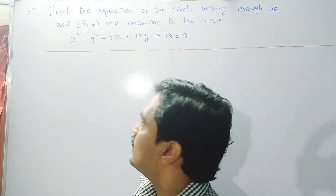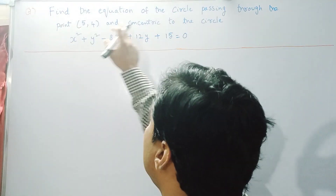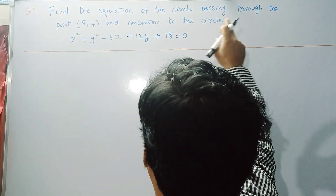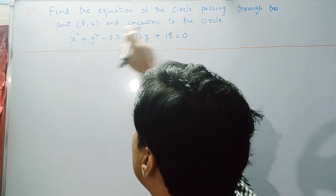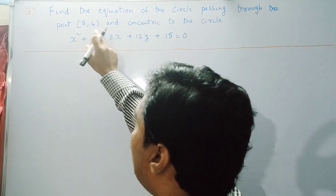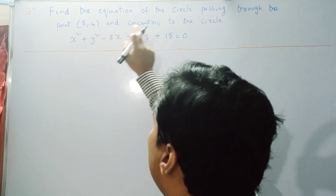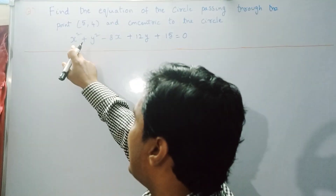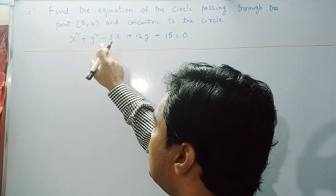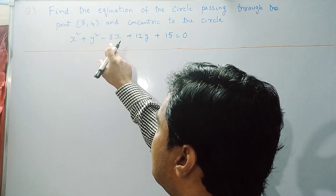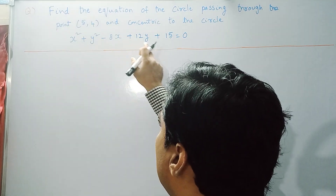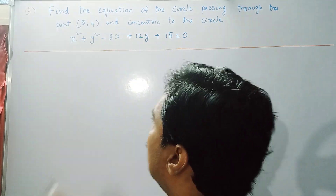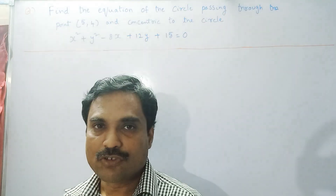The problem is: find the equation of the circle passing through the point (5, 4) and concentric to the circle x² + y² − 8x + 12y + 15 = 0.